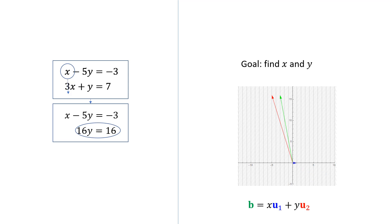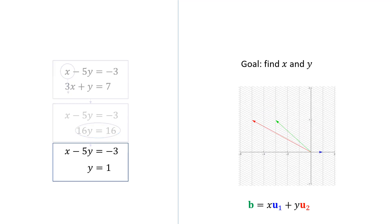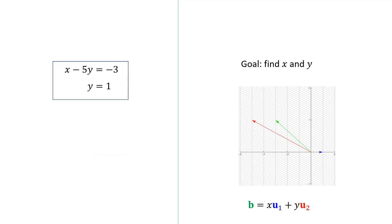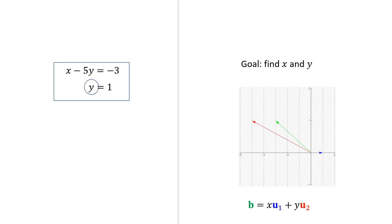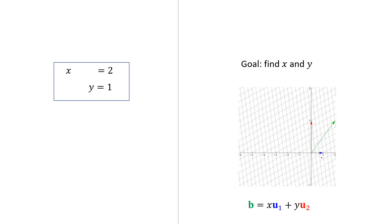Now we can rescale the second row by a factor of 1/16. Here's what that looks like in terms of linear transformations. Now we have a much easier problem — we're still trying to write b as a linear combination of u1 and u2, but the problem's much simpler now. We'll finish off the elimination by eliminating above the pivot y. The result looks like this: at this point it's clear that we need to rescale this vector by 2 and keep this vector at 1. So this is our solution: x equals 2, y equals 1.